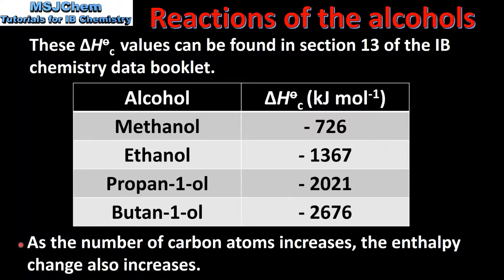So as the number of carbon atoms increases, the enthalpy change also increases. Butan-1-ol with its four carbon atoms has the highest enthalpy change of combustion value, and methanol with its one carbon atom has the lowest enthalpy change of combustion value.